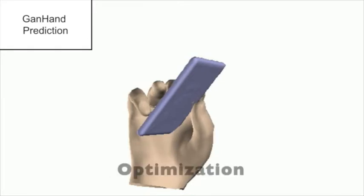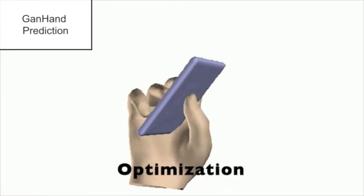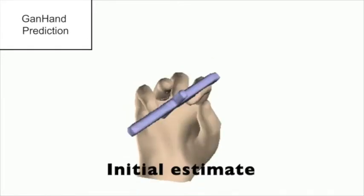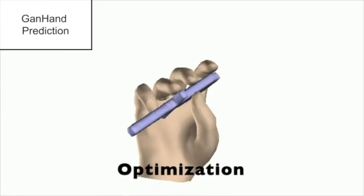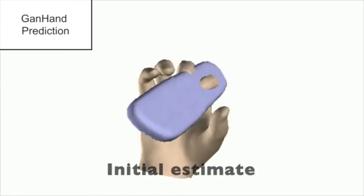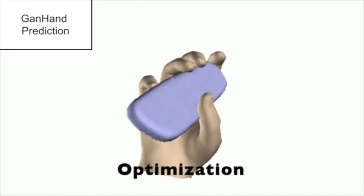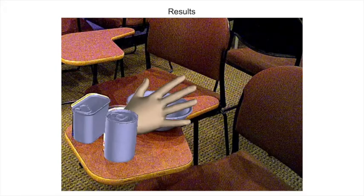These experiments show the effect of this final optimization with predicted grasps on ground truth objects. The first evaluation is done on the OBMAN dataset made with single and synthetic objects from ShapeNet. We then evaluate on the YCB affordance dataset.